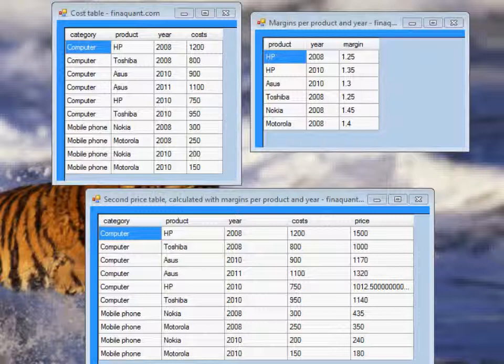Nevertheless, you get the price table by executing exactly the same table function, because the general pattern remains the same. The only difference is the second input parameter, namely the margin table.